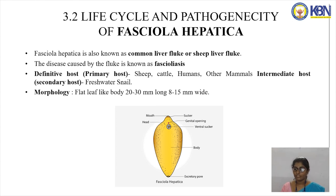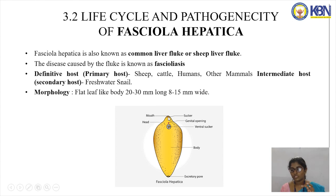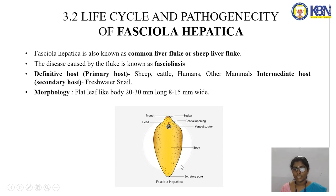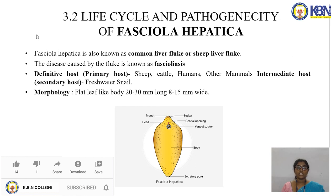Now let us discuss the life cycle and pathogenesis of Fasciola hepatica. In this diagram we can observe the structure: the top part is the mouth, the apical notch is called the head, a genital opening is present, there is an oral sucker which holds the organism to any surface, a ventral sucker, and at the last end is the excretory pore.